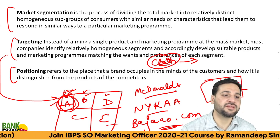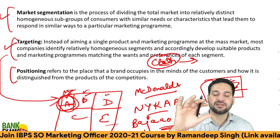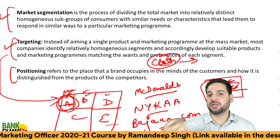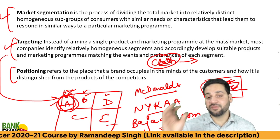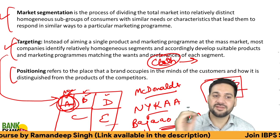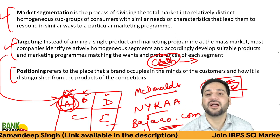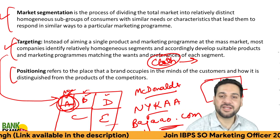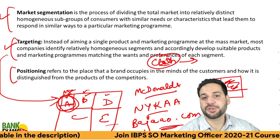So market segmentation divides the market, and targeting means you selected a segment, made a product for it, and ran a marketing campaign for that particular segment. iPhone 12 is another example — they are targeting the rich.